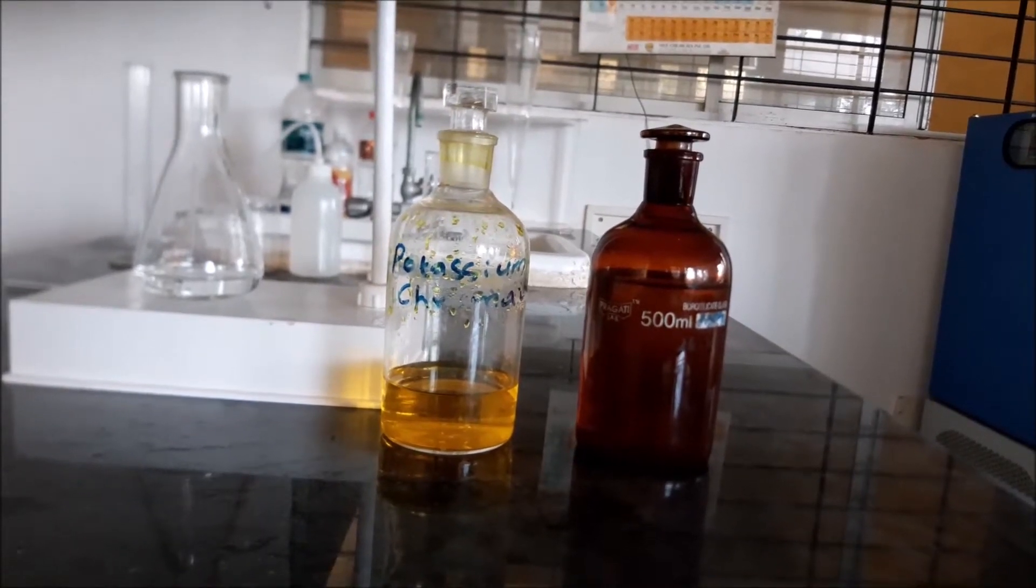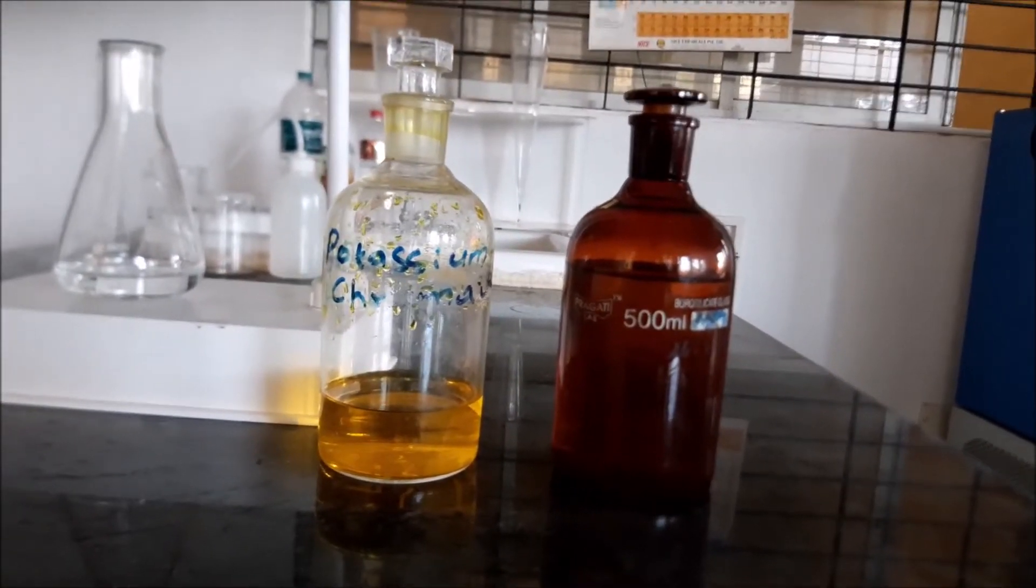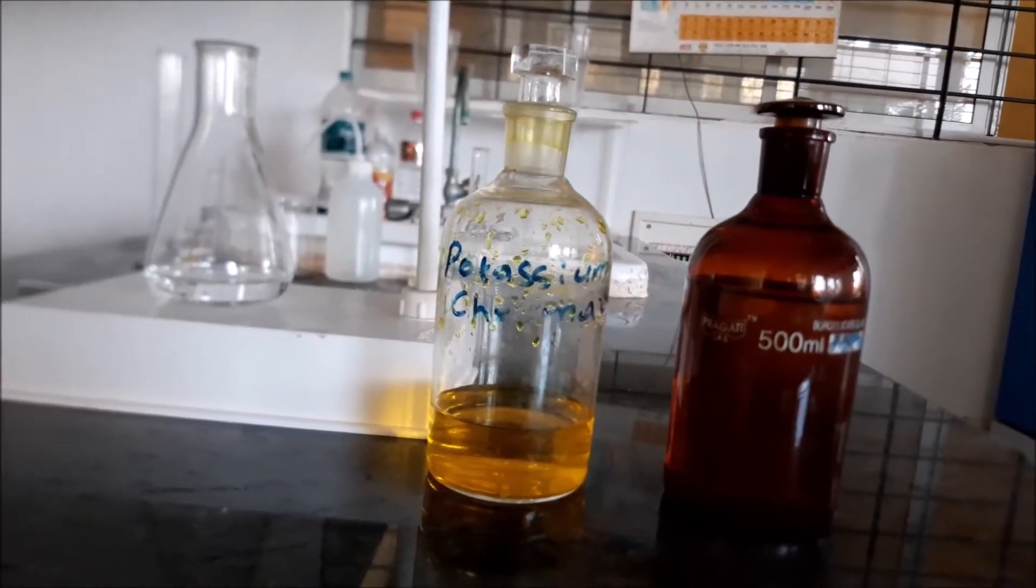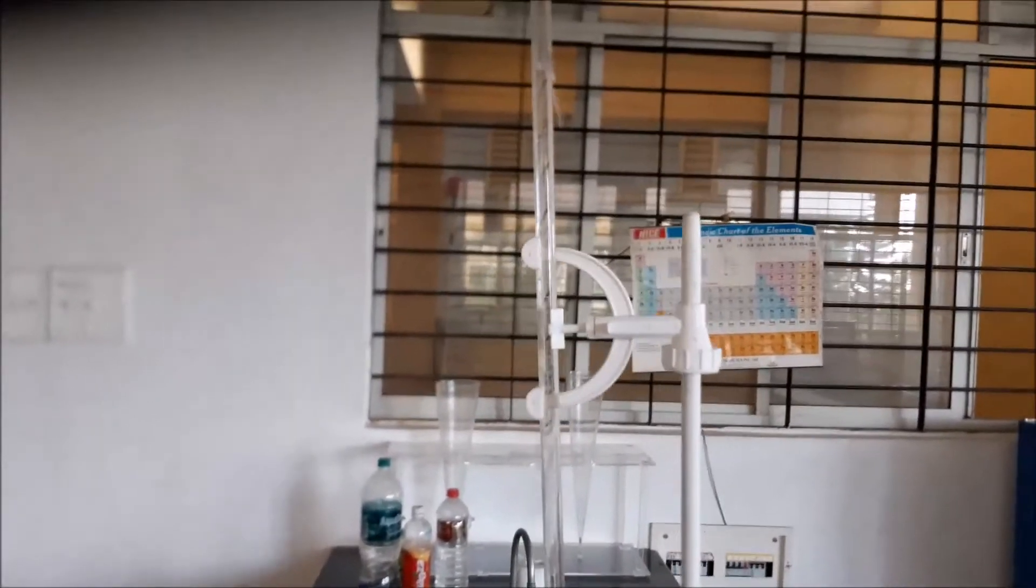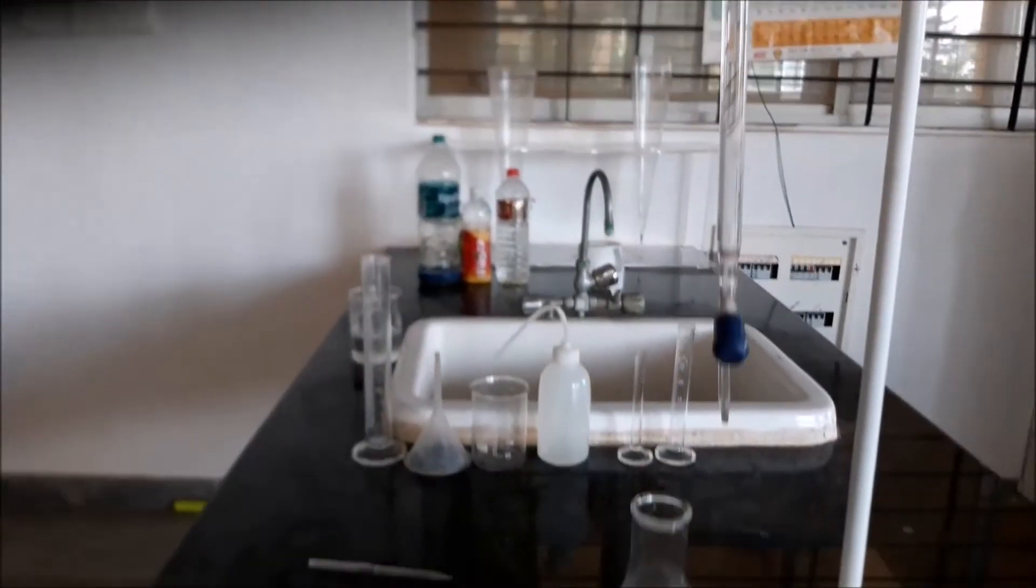Today we will be doing the determination of chlorides. Here you can see silver nitrate and potassium chromate as the indicator. In the burette we have filled it with AgNO3, that is silver nitrate, and in the conical flask we have